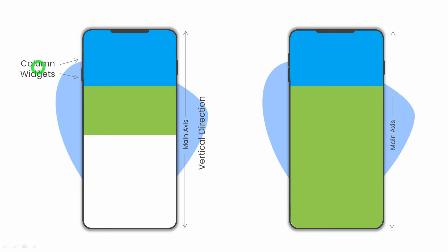Similarly, in the case of a Column, the vertical direction is the main axis. So if you want this green container to expand to the available size along the main axis, it has to be wrapped inside the expanded widget. Let's see how you can do this practically using code.